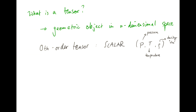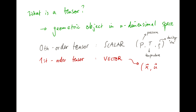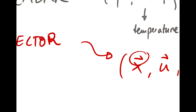The next order up for tensors is the first order tensor. This is a mathematical object that you will have come across many times, which is the vector. Vector fields in our class are typically the position vector x, the velocity vector u or v, or acceleration, such as acceleration due to gravity, g.